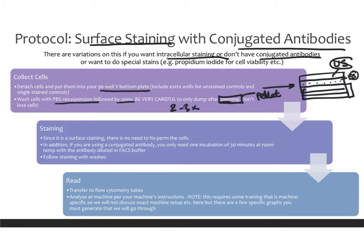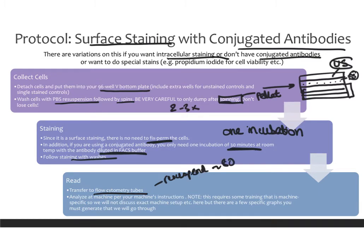Be very careful about that. Then we're going to stain. Since we're doing a surface staining, we don't need to fix or permeabilize the cells because we just want to see what's on top of them. Since we're doing a conjugated antibody, we only need one incubation — this is a primary that has the fluorophore on it. So it's one incubation of 30 minutes at room temperature, with the antibody diluted in FACS buffer. Then follow this with PBS washes. Finally, to read it out, you put the cells in flow cytometry tubes — resuspend in about 80 µL of FACS buffer and transfer to a flow cytometry tube.